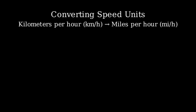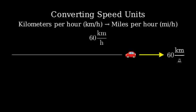This is a common conversion that's useful when traveling between countries that use different measurement systems. Let's say we have a car traveling at 60 kilometers per hour and we want to know what the speed is in miles per hour. This is especially useful when driving in a country that uses a different measurement system than what you're used to.